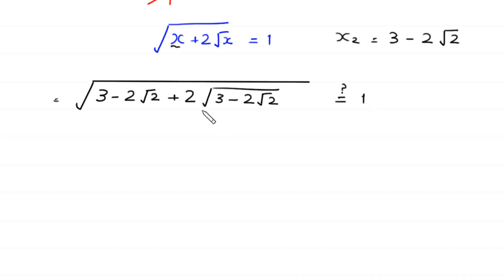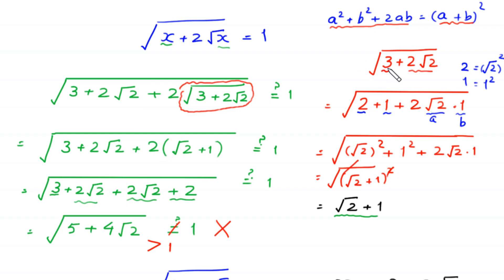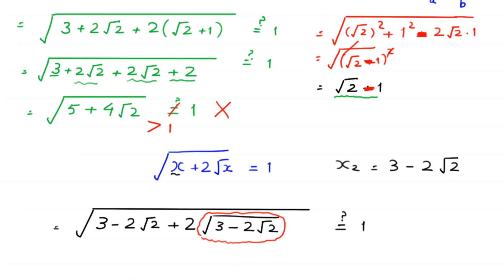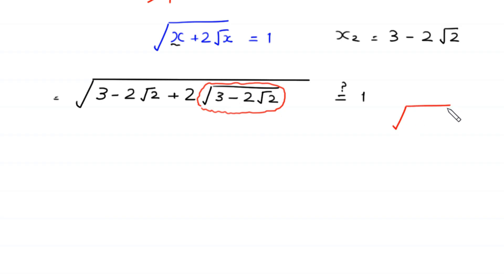We simplify square root of (3 minus 2√2). Since 3 plus 2√2 equals (√2 plus 1)², changing the sign gives 3 minus 2√2 equals (√2 minus 1)², so square root of (3 minus 2√2) equals √2 minus 1.